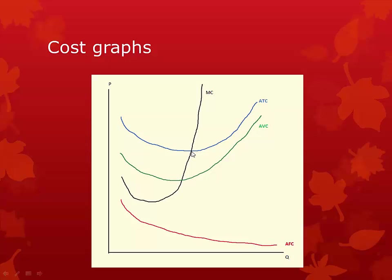Eventually, it will reach a point where marginal cost intersects average total cost — where the cost of producing an additional good is greater than the average total cost — and at this point, average total cost will just increase and increase. Notice that average total cost is a similar graph to average variable cost, with just the minimum shifted slightly to the right. The difference, or the gap between the two curves, is average fixed cost, and notice that this gap becomes smaller and smaller, because average fixed cost also gets smaller and smaller.